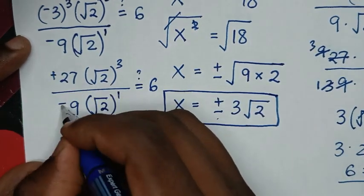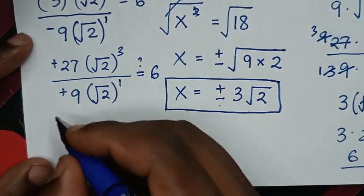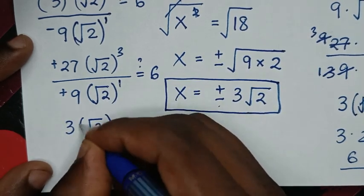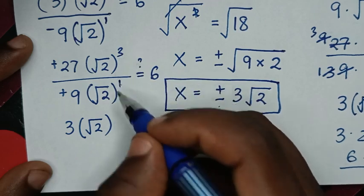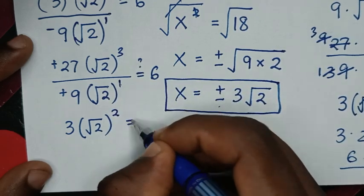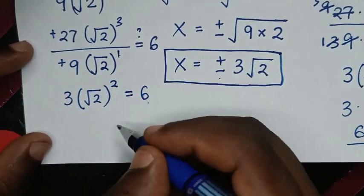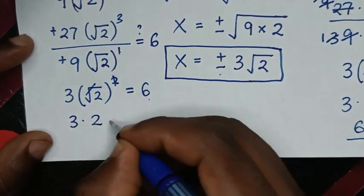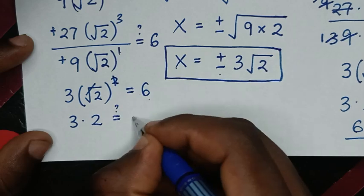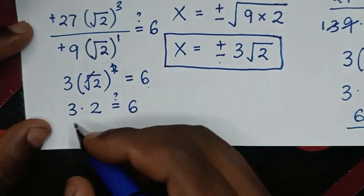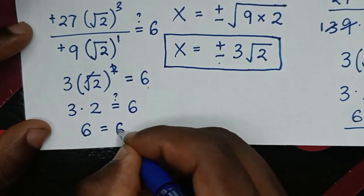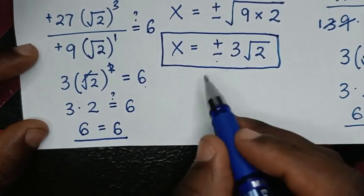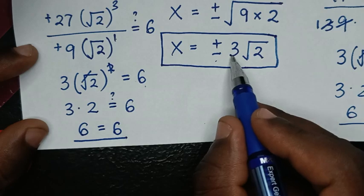From here, this negative and this negative will be positive. Then 27 divided by 9 is 3. Then for square root of 2, it will be square root of 2 bracket power 3 minus 1, which is power 2. To simplify, this square root of 2 bracket power 2 gives 3 times 2, which is equal to 6. So from 3 times 2 it is 6, equal to 6. It is true for the value of x is negative 3 square root of 2.